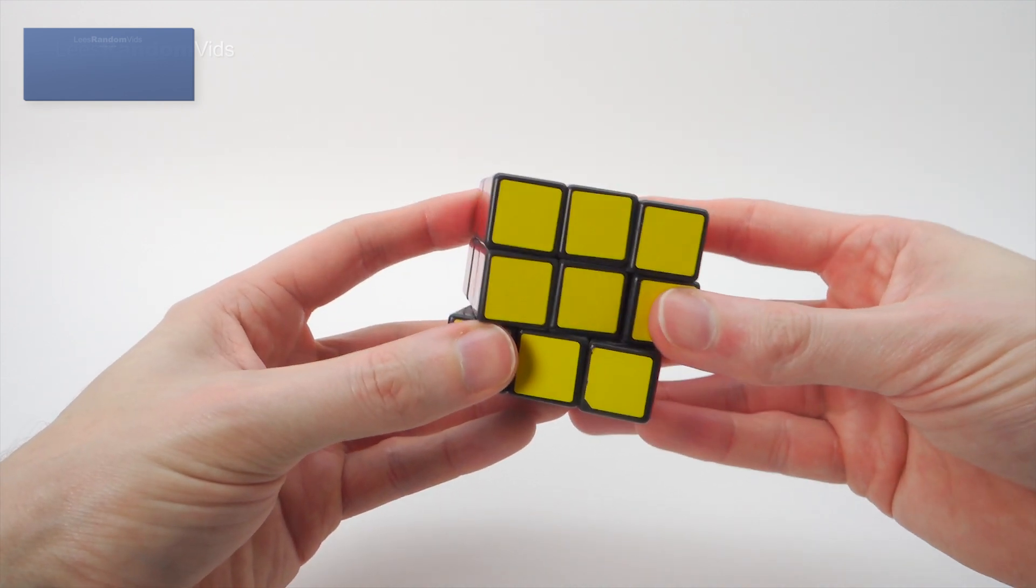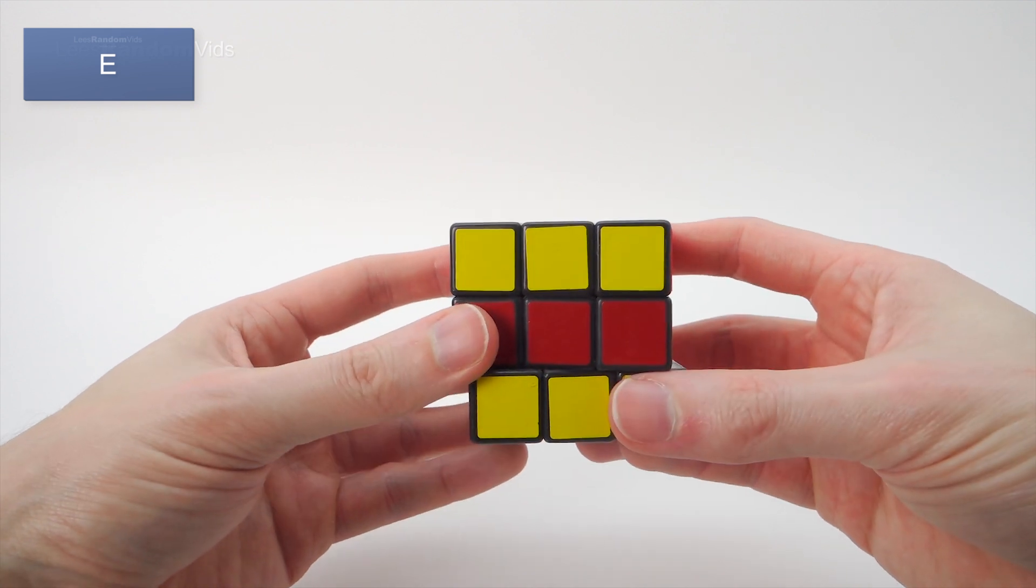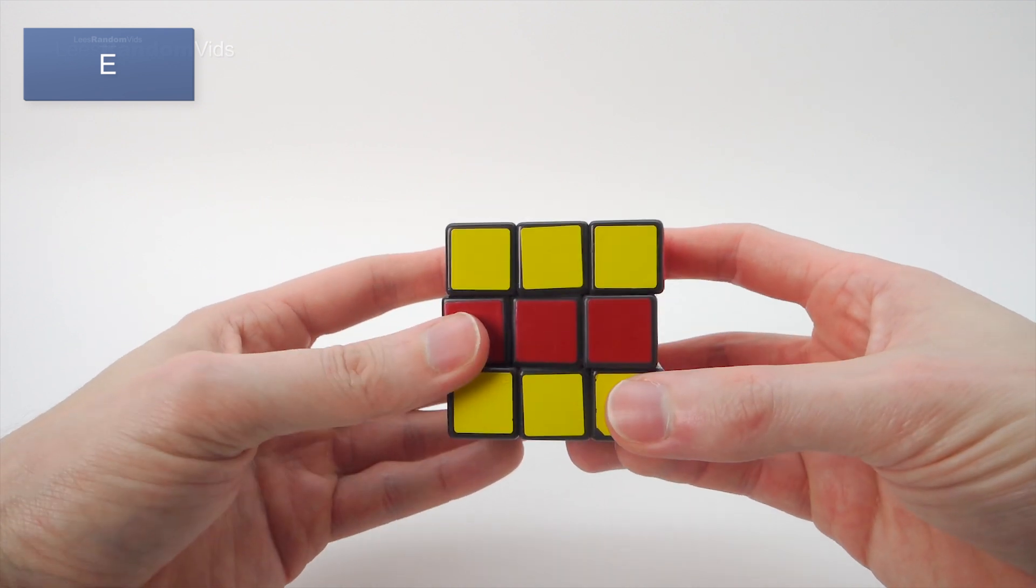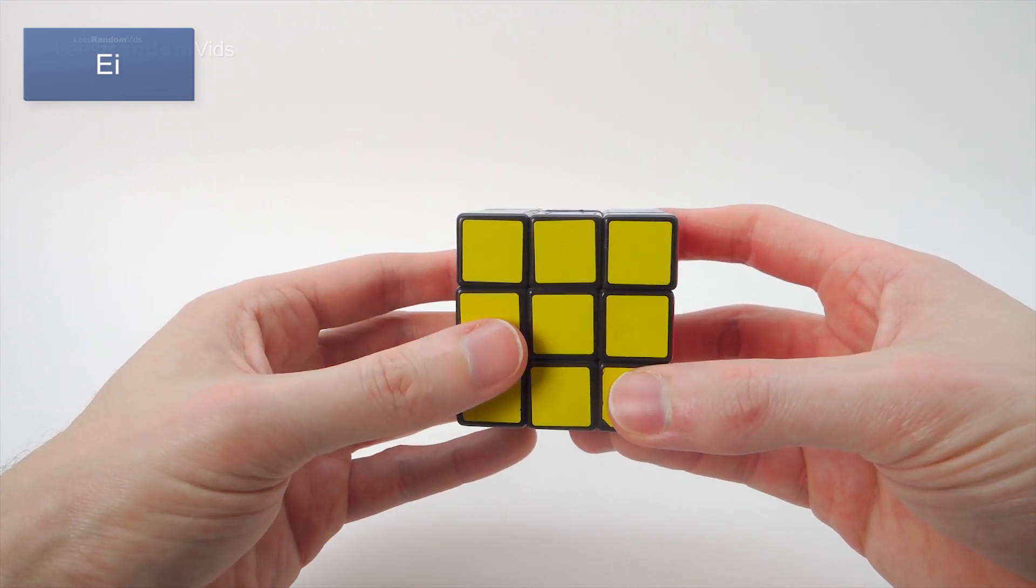For this row here we give the letter E, and the E is for equator. And that way it would be E, that way it would be E inverse.